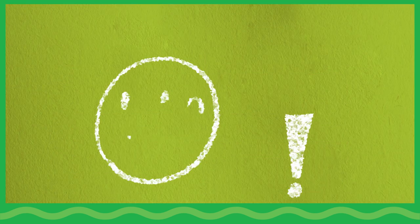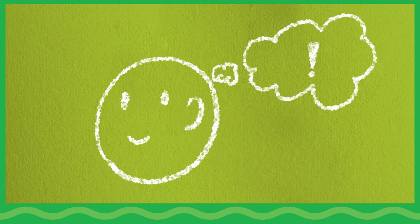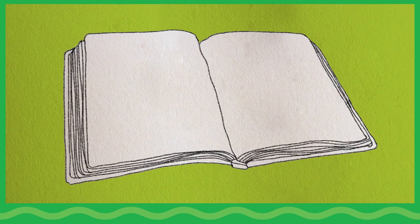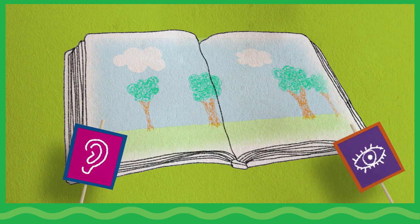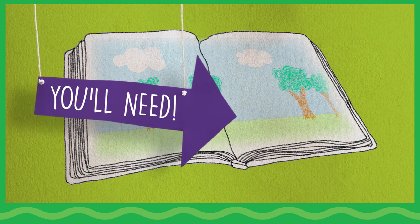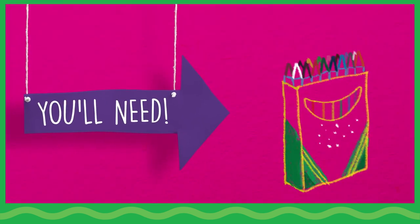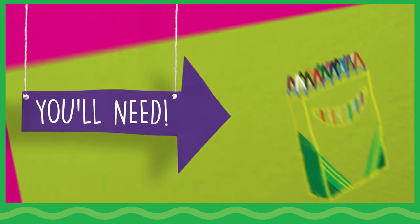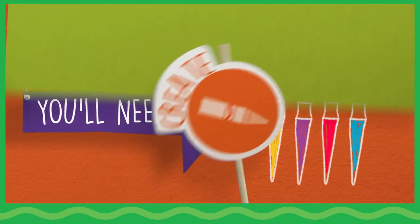Understanding stories involves listening and visualizing. In this activity, children will create illustrations based on a story they have heard or read. You will need multicultural markers, glitter crayons, metallic crayons, and washable paintbrush pens.